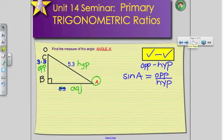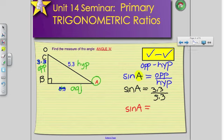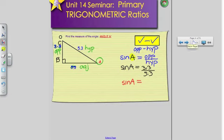So sine of angle A is equal to opposite over the hypotenuse. We're going to use this to solve for angle A. Angle A is my only unknown. That's what we're trying to solve for. So I'm going to fill in the rest. Sine of angle A is equal to 3.3 over 5.3. So, in some ways, this is easier, because we don't have to do any cross-multiplying. However, this problem is going to have an extra step.